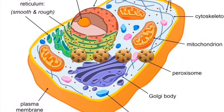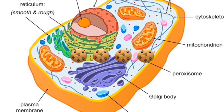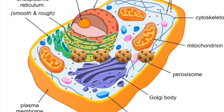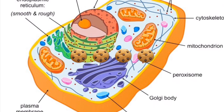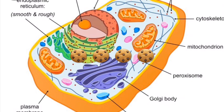The endoplasmic reticulum is involved in protein folding, quality control, and dispatch. The smooth endoplasmic reticulum is associated with the production and metabolism of fats and steroid hormones. It is smooth because it is not studded with ribosomes, and it is associated with smooth, slippery fats.